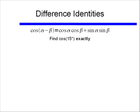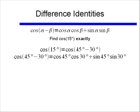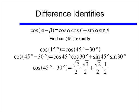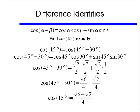Let's do one example of this: find cosine of 15 degrees exactly. We need to recognize that 15 degrees equals 45 degrees minus 30 degrees. Keep in mind that if you use 60 degrees minus 45 degrees instead, you'd get the exact same answer — 45 minus 30 is not the only path. As long as your two angles have a difference of 15 degrees, you'll get the correct answer. Using the formula, cosine of 45 degrees minus 30 degrees equals cosine of 45 degrees times cosine of 30 degrees, plus sine of 45 degrees times sine of 30 degrees. Plugging in our values, we end up with square root of 6 over 4, plus square root of 2 over 4, so cosine of 15 degrees equals square root of 6 plus square root of 2, all over 4.